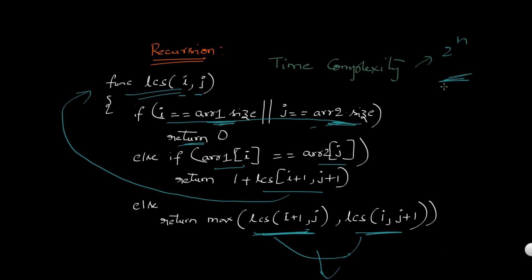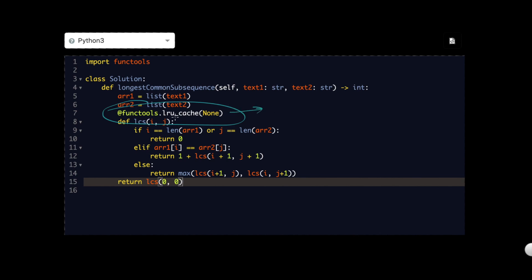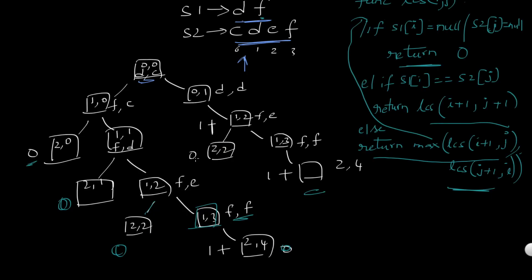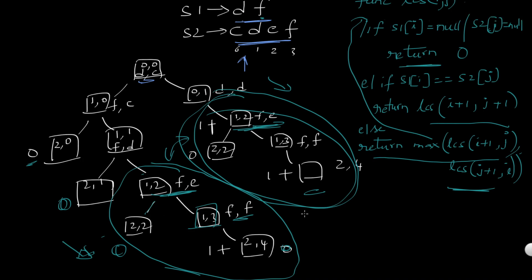The time complexity of this naive recursion is too high — if we try this on LeetCode we get TLE (Time Limit Exceeded). The solution is to use caching. We can use functools.lru_cache in Python. Looking at the recursion tree, there are repetitive subproblems — for example, the F,E subtree appears multiple times. Once a path is computed, there's no need to recompute it. LRU cache stores these results and returns cached values, significantly reducing time complexity. With this, LeetCode accepts our solution.